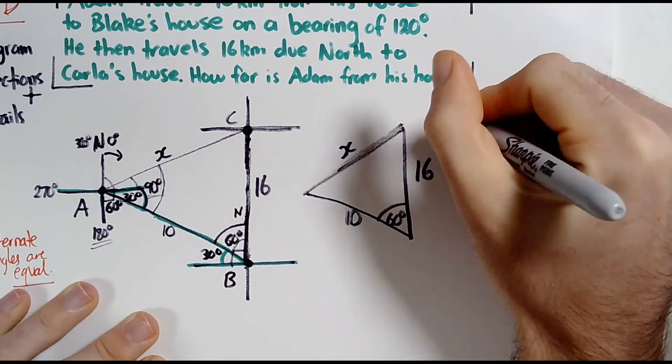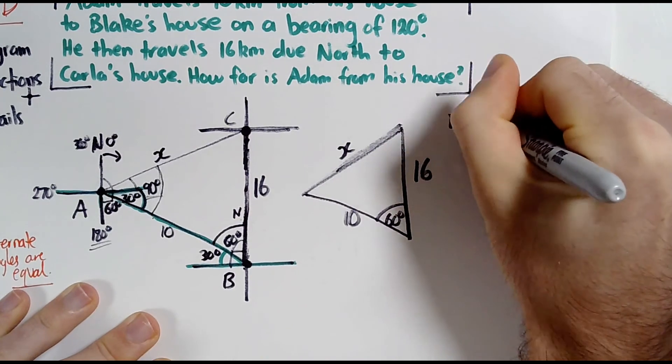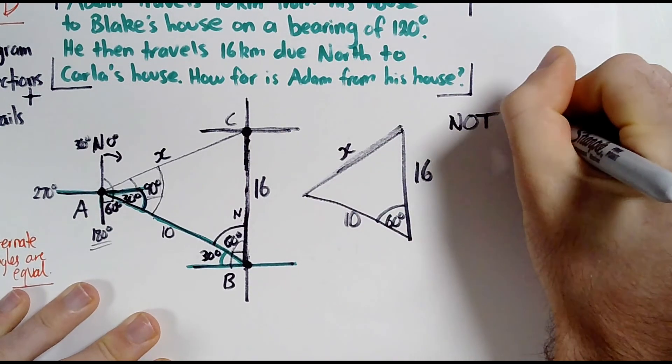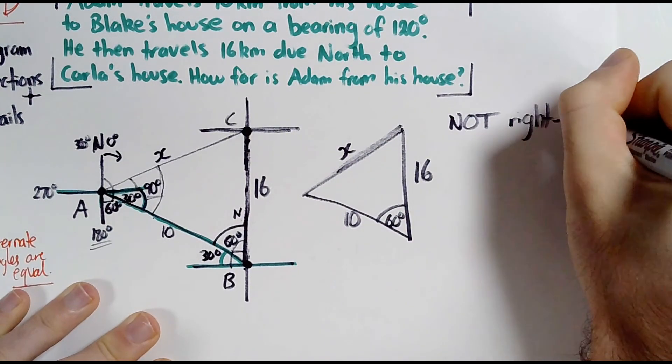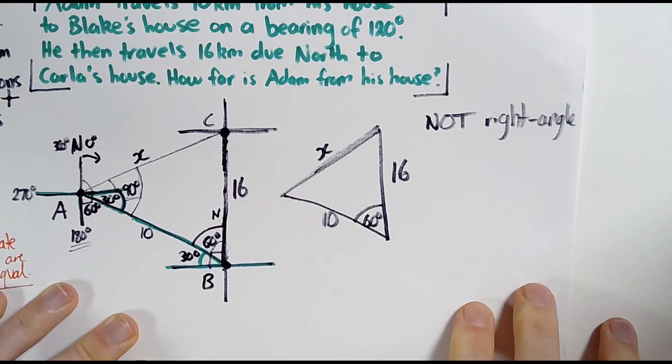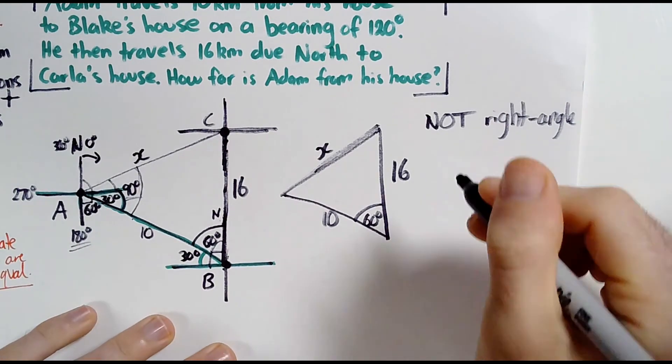So we have a non-right angle triangle, so it's not right angled. So we don't use Sohcahtoa, and we can't use Pythagoras. It's not right angled.